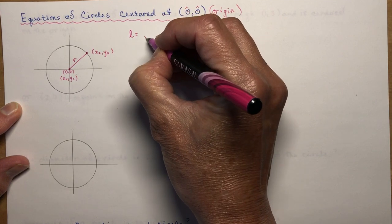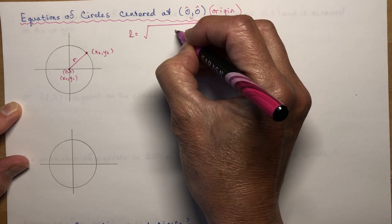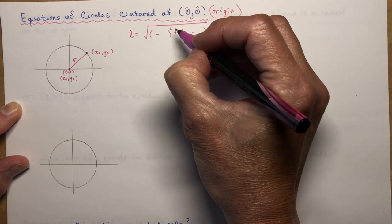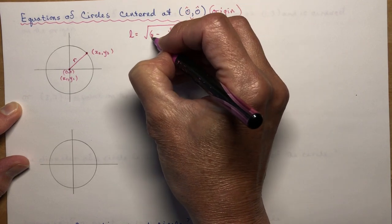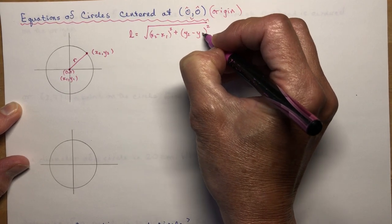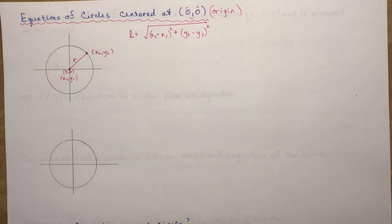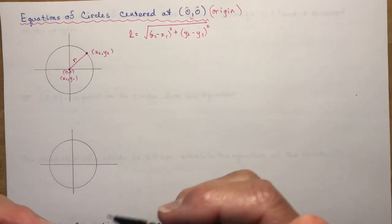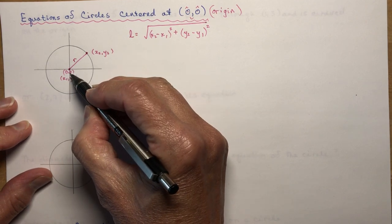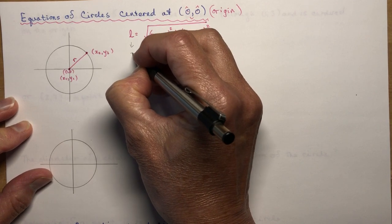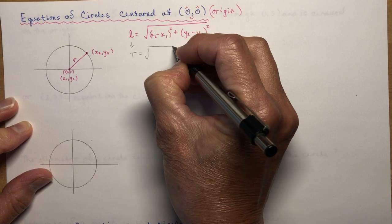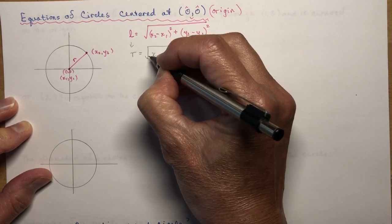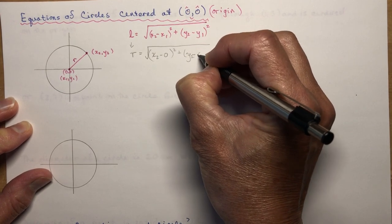If we go back to the formula for the length of a line segment — do you remember? We made that fun little face shape, and we said x2 minus x1 squared plus y2 minus y1 squared. So if we have a circle centered at the origin, we call it x2, y2, and we're using 0, 0 as the other point. We change the L to an R because that is the radius.